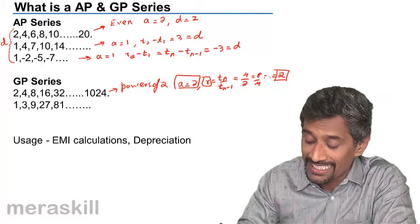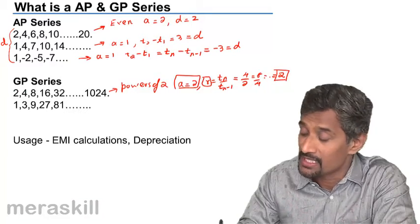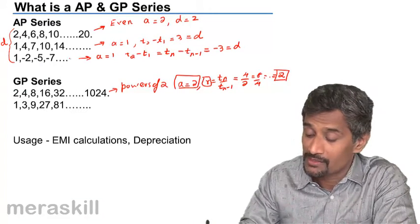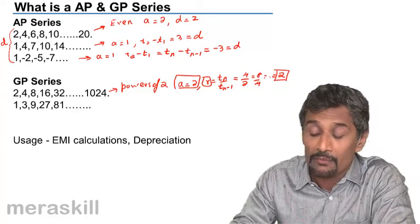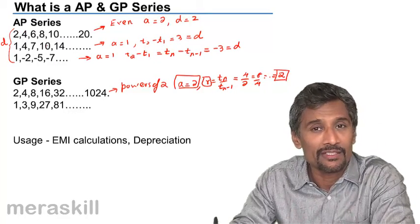I hope you are able to understand the difference between the two. Here you have to divide each term by the previous term and you see that the ratio remains constant. In AP, you subtract each term from the next term and you find that there exists a common difference.